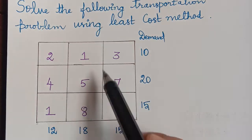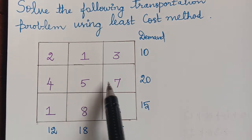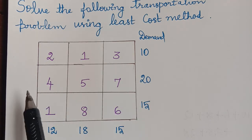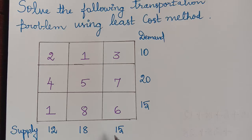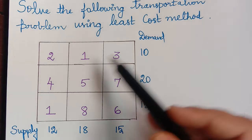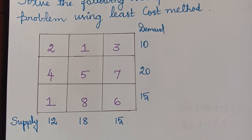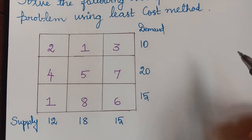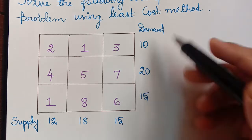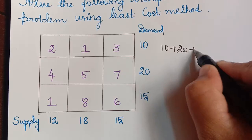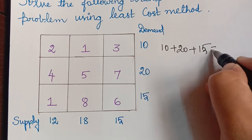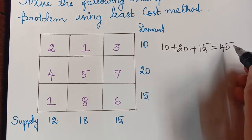The cell entries are the cost per unit spent on transportation of goods from the sources to the destinations. This is the demand and this is the supply given. First, we have to check whether the given problem is a balanced or unbalanced transportation problem. For that, we add up all the demand: 10 plus 20 plus 15, which equals 45.